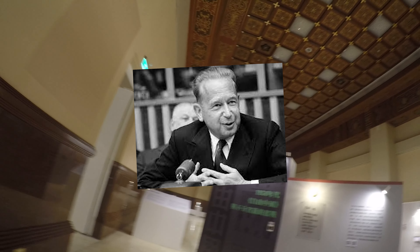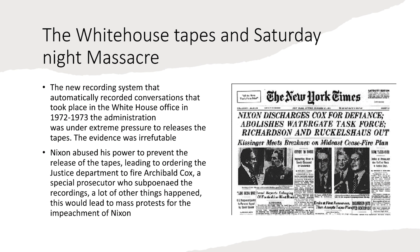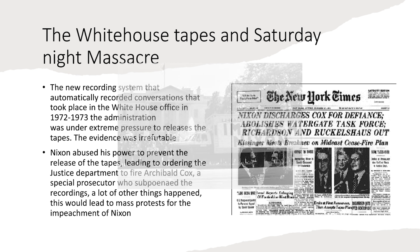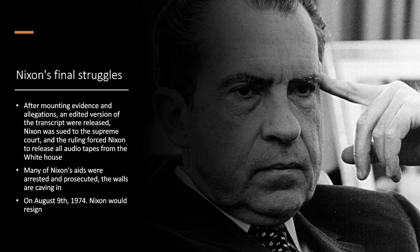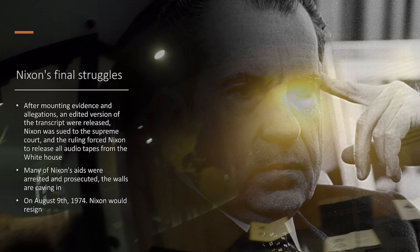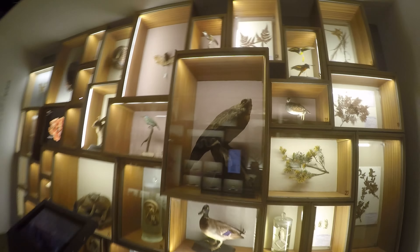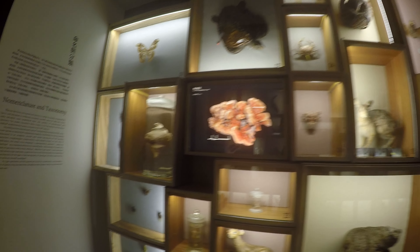A lot of other things happened, but eventually truth would prevail. This led to mass protests and demonstrations outside of the White House and throughout the nation, calling for the impeachment of President Richard Nixon. After the mounting evidence and allegations, finally an edited version of the transcript from the White House recordings were released. Richard Nixon was sued by the Supreme Court, and the ruling forced Mr. Nixon to release all the audio tapes from the White House. During this time, many of Nixon's aides were arrested and prosecuted. The walls were caving in on all sides for Mr. Nixon, and finally, on August 9th of 1974, President Richard Nixon resigned in disgrace.